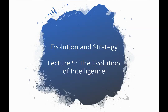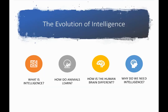Welcome to lecture 5 in our series on evolution and strategy. This lecture is on the evolution of intelligence. In this lecture we'll be addressing four questions: what is intelligence, how do animals learn, how the human brain is different from that of other species, and why do we need intelligence?